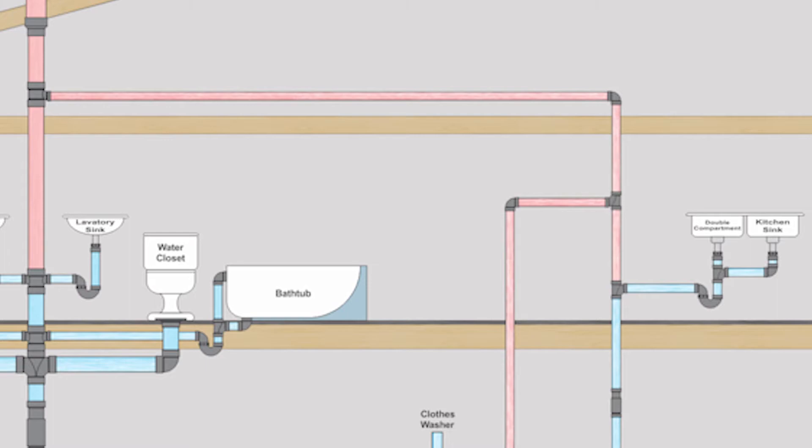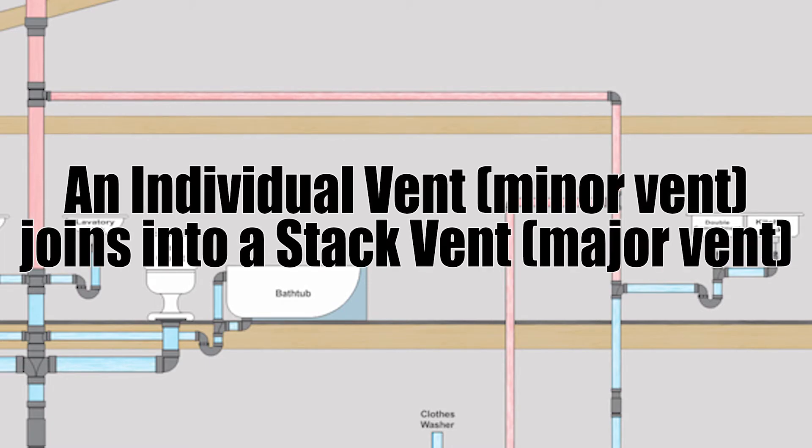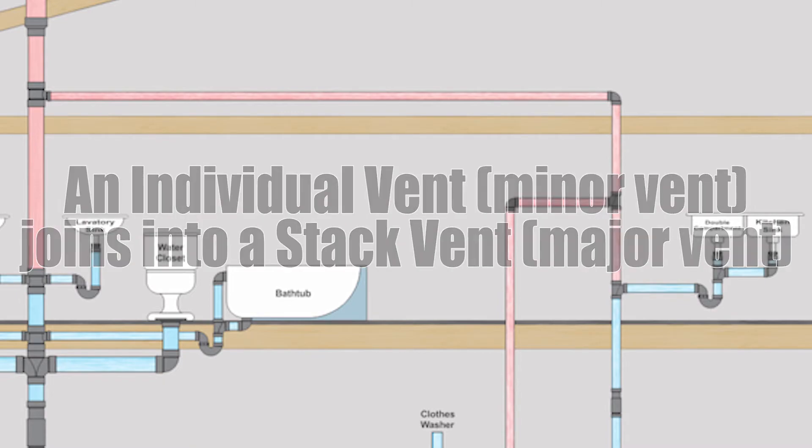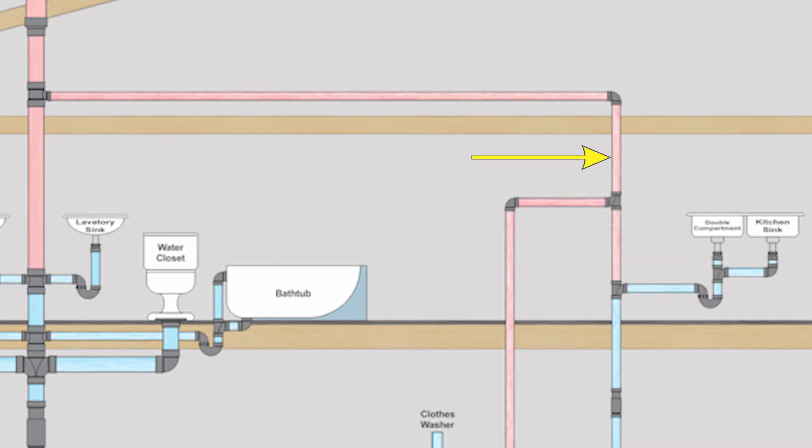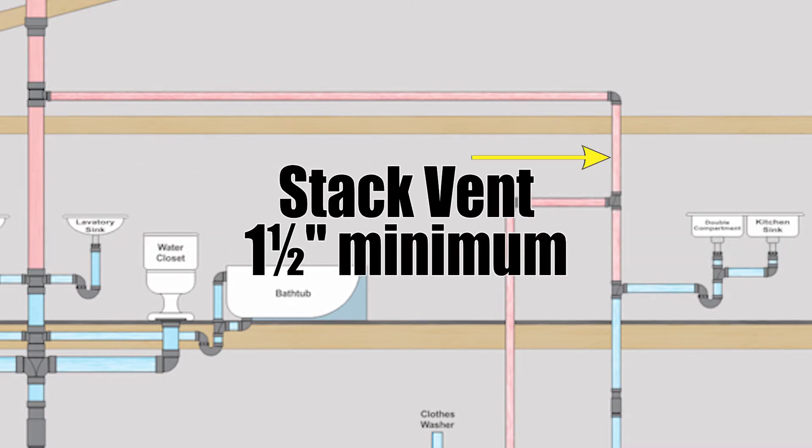The last thing I want to point out about that is we have an individual vent which is a minor vent joining into a stack vent which is a major vent and whenever that happens the major vent will keep its name meaning that resulting vent pipe that is going to go up and over to the main stack will still be called a stack vent.